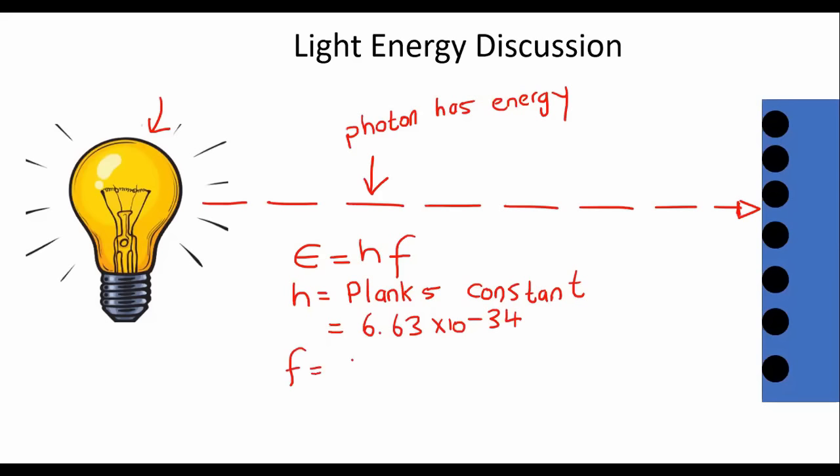F is frequency. And that's always measured in Hertz. So pretty much if you know what the frequency of the light is, then you can calculate how much energy it is. Oh, I should also just say here E is the energy of the light. E is the energy of the light. And that is always measured in joules.